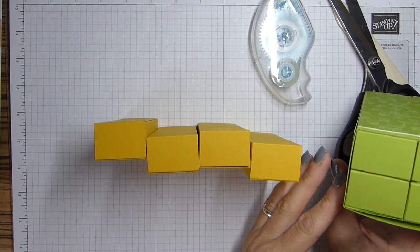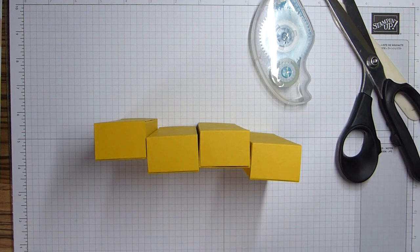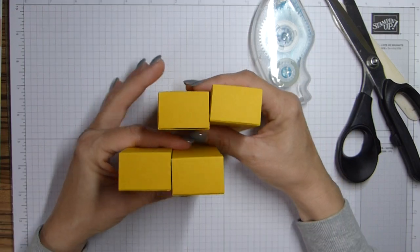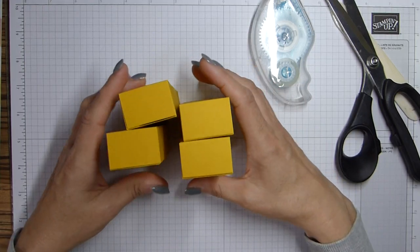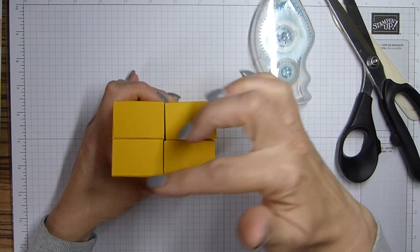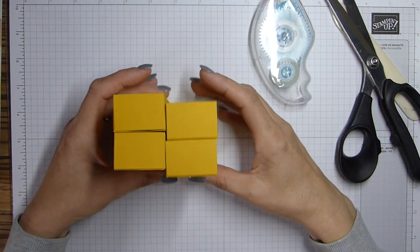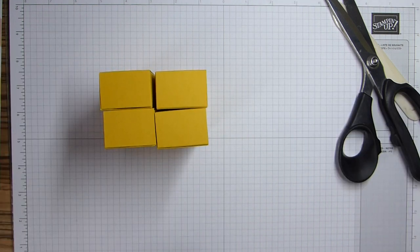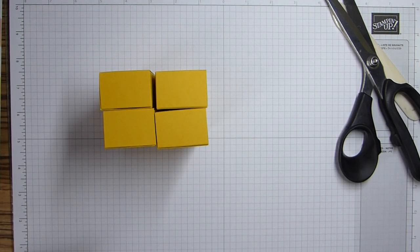So I've now got them in a square. So the first thing I want to do then is add my hinges.